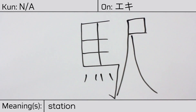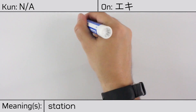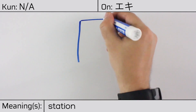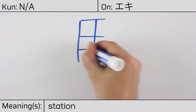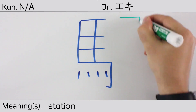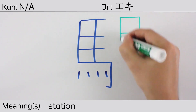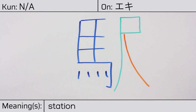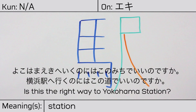This character is made up of the following radicals or parts: horse, uma, on the left, and the flag radical on the right. You can remember this kanji by the following hint: stables along highways with small stalls for horses, which eventually became train stations. Our example sentence is: Yokohama eki e iku no ni wa kono machi de ii no desu ka? — Is this the right way to the Yokohama station?